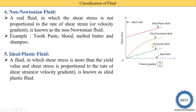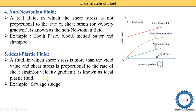In a Newtonian fluid the shear stress is proportional to rate of shear strain, so we draw a straight line. In the ideal plastic fluid definition, one condition is added: shear stress must be more than the yield value. So we draw the line not from the zero point but from some shear stress value — from that point we draw a directly proportional line. This is represented as ideal plastic fluid. An example of ideal plastic fluid is sewage sludge.